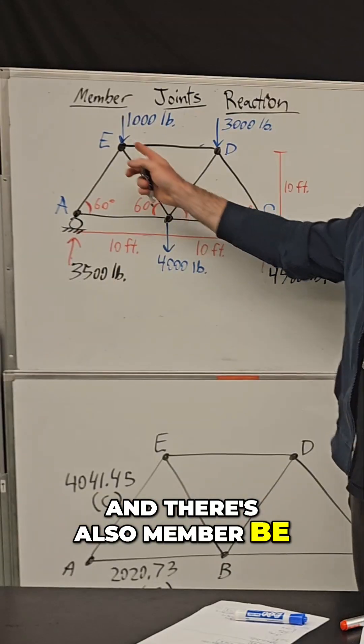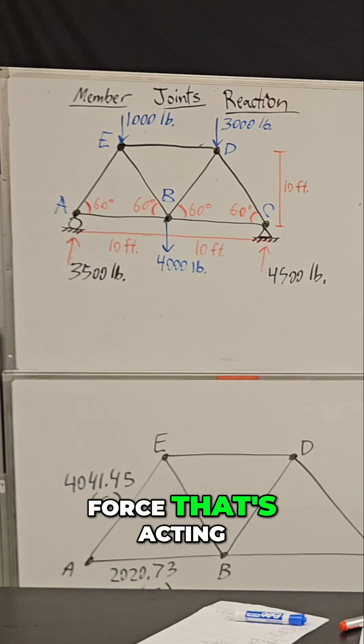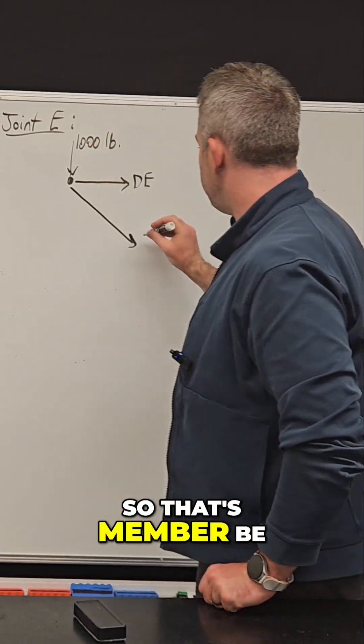There's also member BE. That member is acting—it has a force that's acting at joint E. We're also going to assume that that one is in tension. So that's member BE.